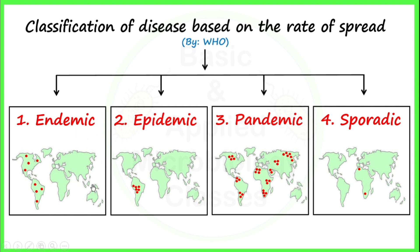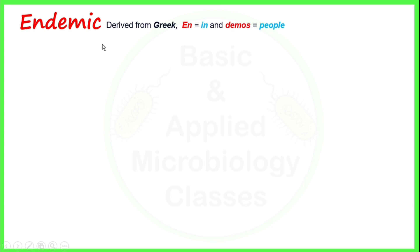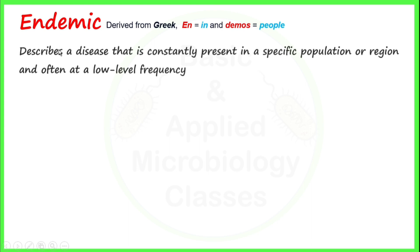Let's start from the first one, that is endemic. The word endemic has been derived from Greek, where the meaning of 'en' is 'in', and 'demic' has been taken from 'demos' which means 'people'. So the meaning of endemic is 'in people'. This term endemic is used to describe a disease that is constantly present in a specific population or region, often at a low level frequency.